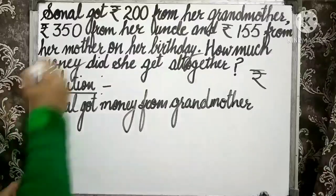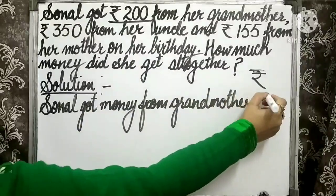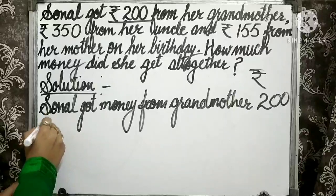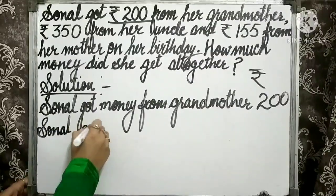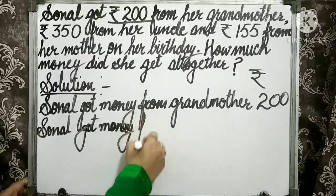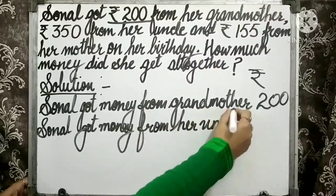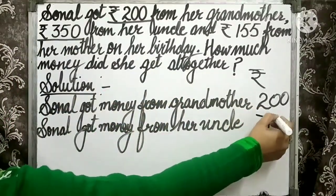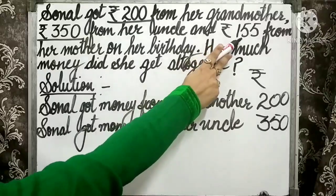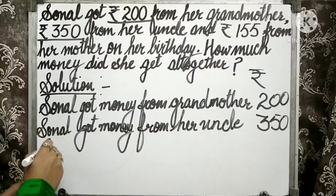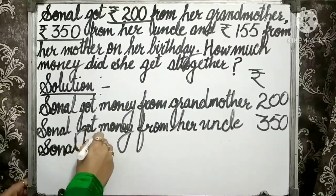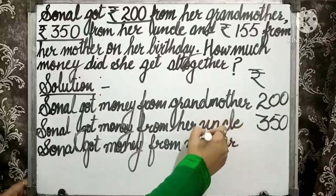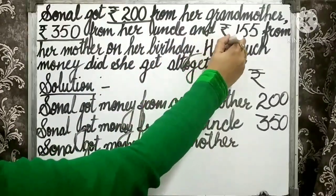Here I am writing: Sonal got money from her grandmother — how much money did she get from her grandmother? Rs. 200. How much money did she get from her uncle? Sonal got Rs. 350. And Sonal got Rs. 155 from her mother — how much money did she get from her mother? Rs. 155.